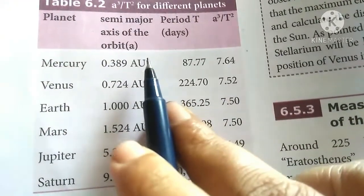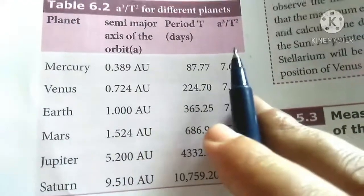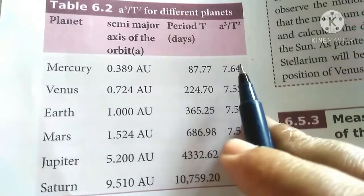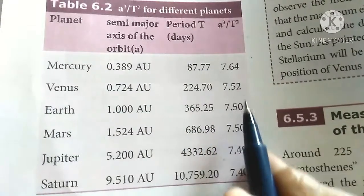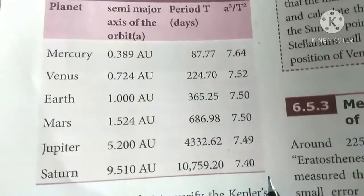The table shows distance, time period, then we have a cubed by t squared. This is Kepler's third law. The ratio for all planets is the same.